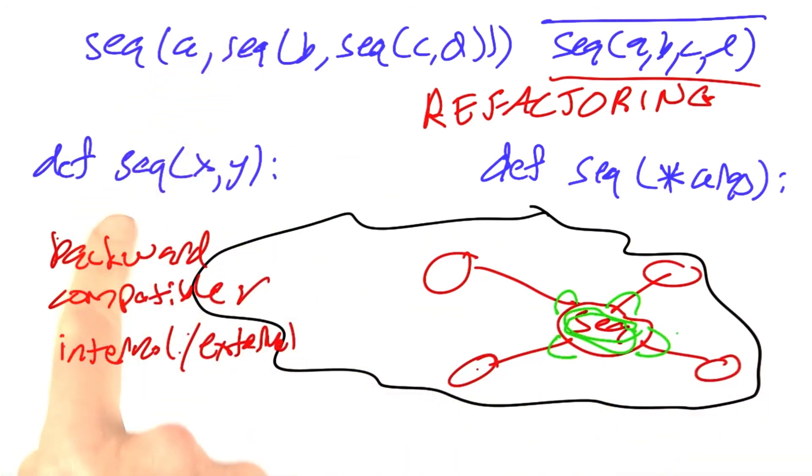In this case, going from the binary version to this n-ary version, I can make it backwards compatible if I'm careful. It's definitely going to be both an internal and an external change, so I'm going to have to do something to the internal part of sequence, and then I'm also changing the signature of the function, so I'm affecting the outside as well. I can make that effect in a backwards compatible way.